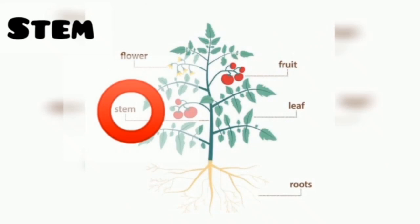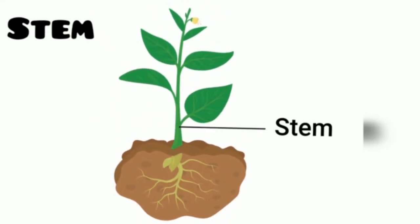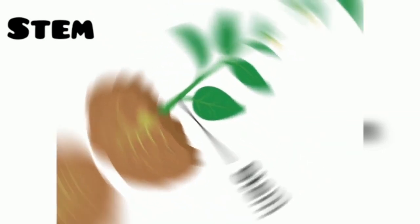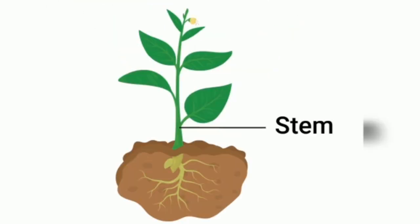Stem. They are found above the ground. Provide strength and support to buds, flowers, leaves and fruits. It stores food mainly in the form of starch. It transports food, water and minerals to all parts of the plant body.